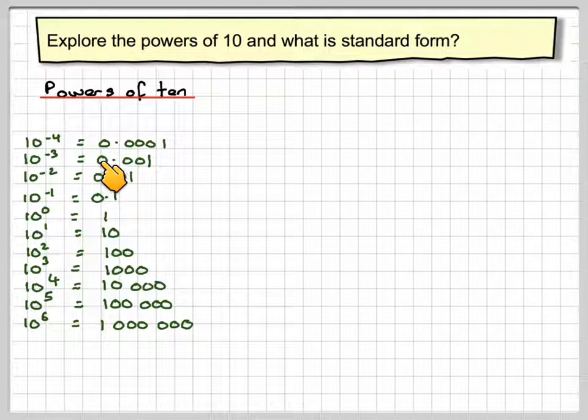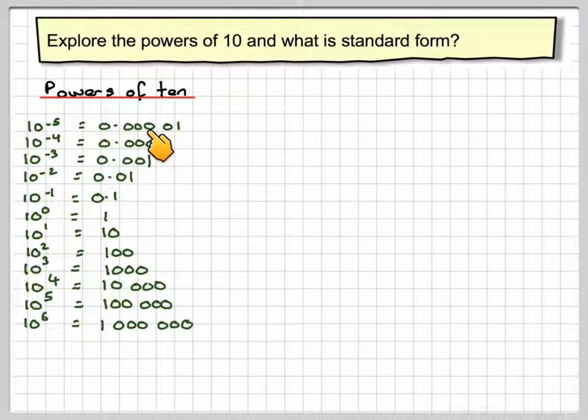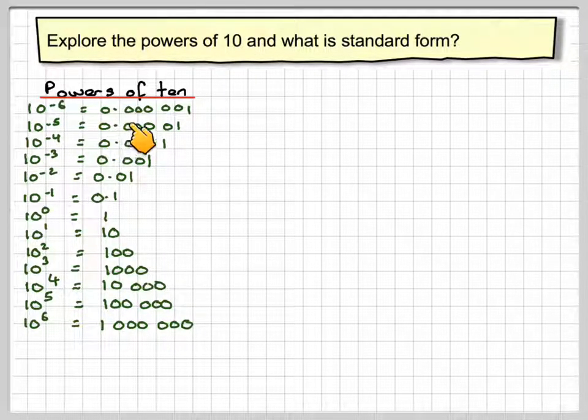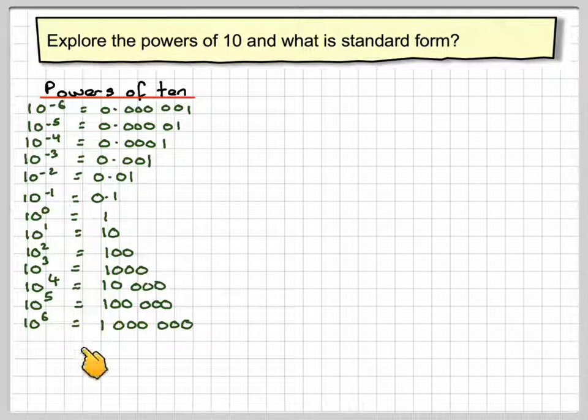10 to the minus 4 is 0.0001, 10 to the minus 5 is 0.00001, and 10 to the minus 6 is 0.000001. The pattern continues in both directions.